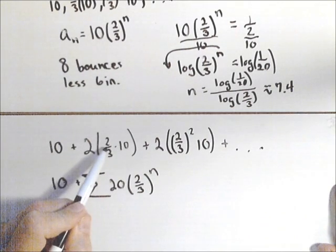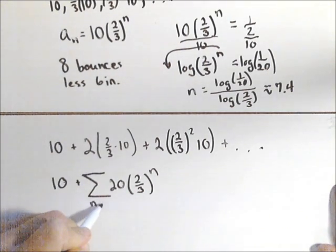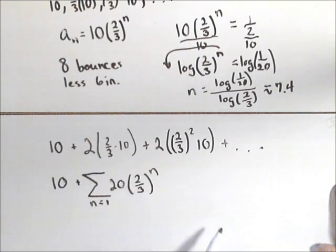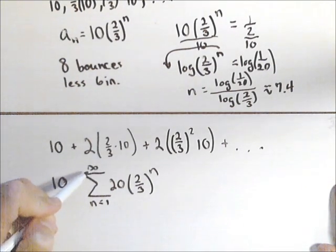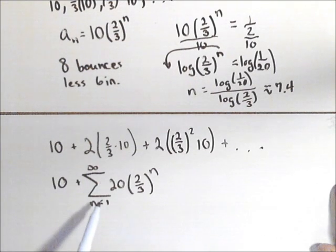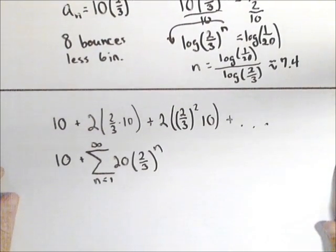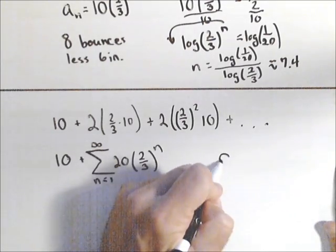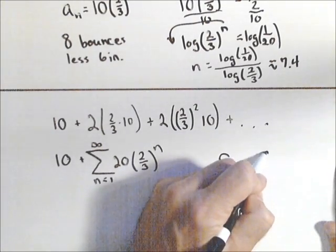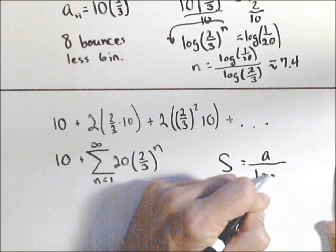Now here, notice that it starts at two-thirds to the first, so I'm going to start at n equals one. And we want the total distance traveled, so we want to measure this thing as it goes to infinity. So we have 10 plus an infinite geometric series. Well, we can do the sum of an infinite geometric series. Remember that the sum is equal to the first term over one minus the common ratio.